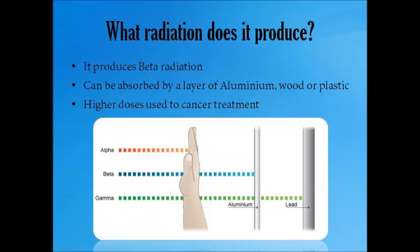What type of radiation does it produce? Iodine-131 produces beta radiation, which has the power to penetrate skin or paper, and it can be absorbed by a layer of aluminium, wood, or plastic. This type of radiation is known for causing mutation and, in some extreme cases, death in the cells.